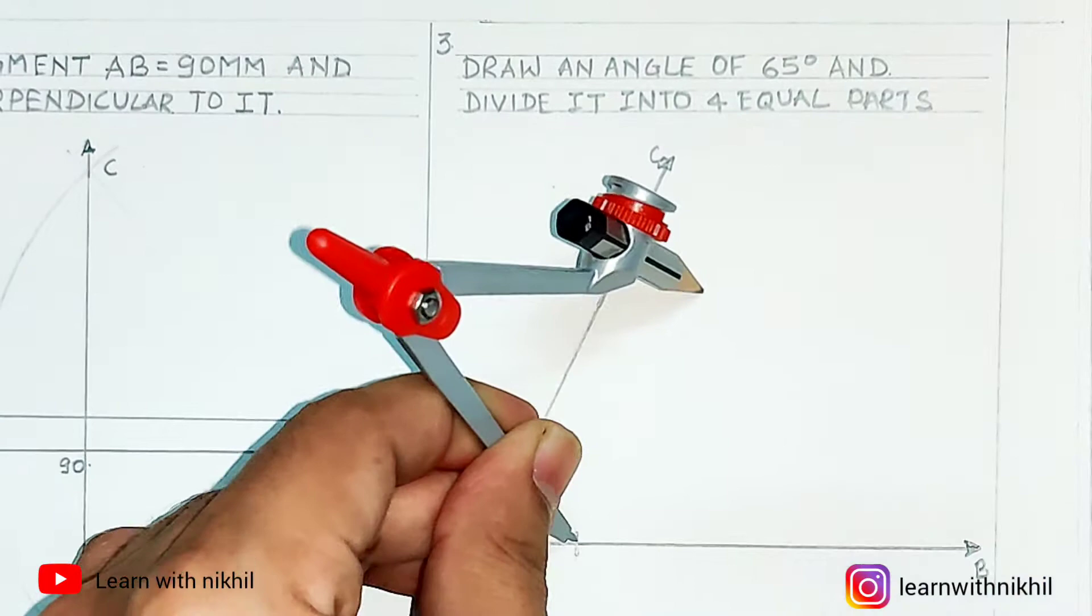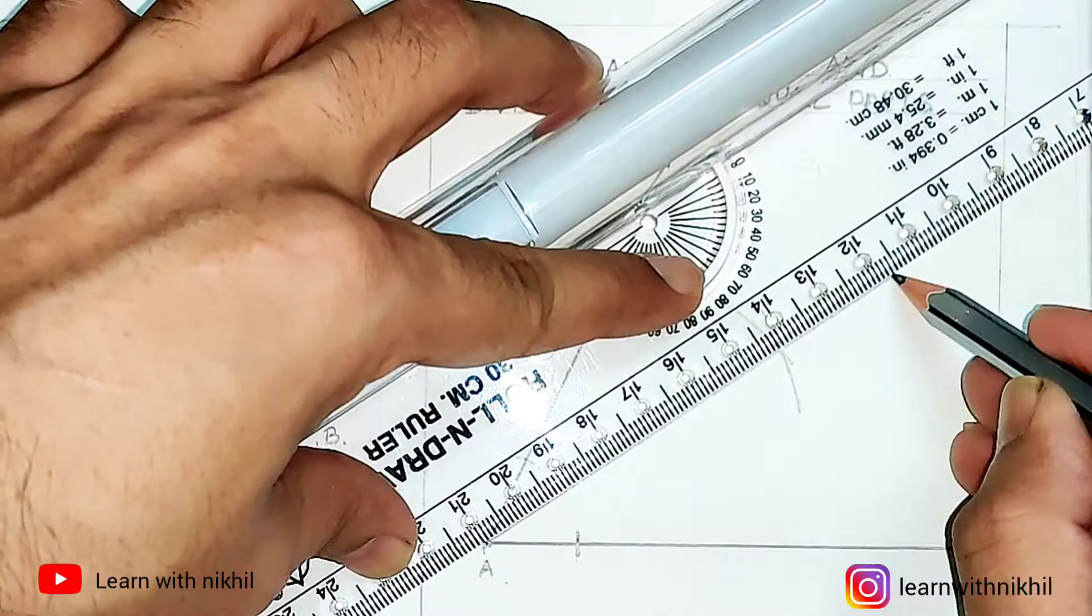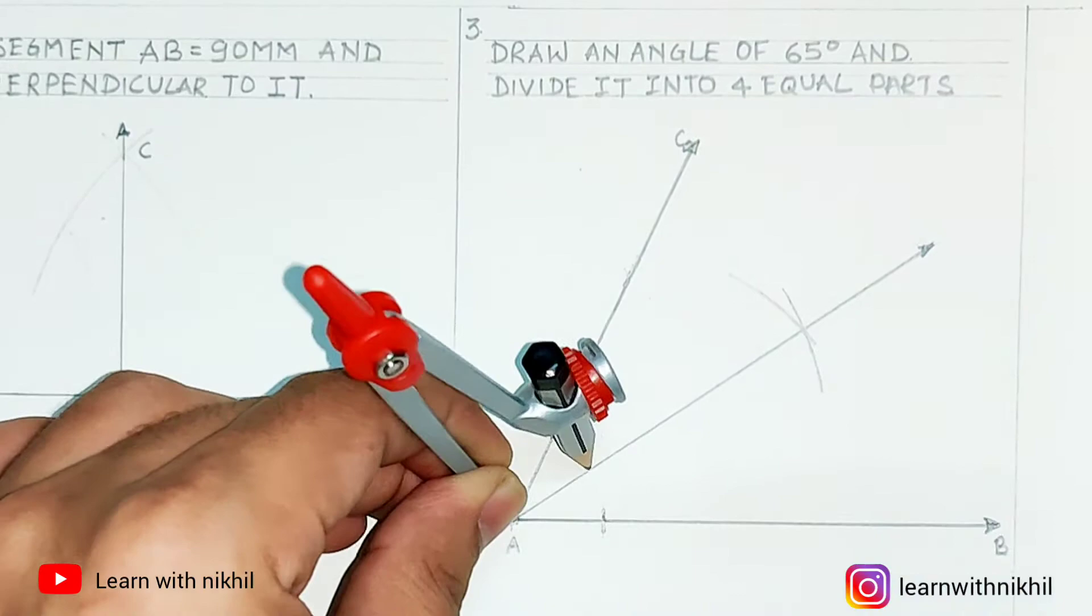Now using the angle bisector method, we will first divide the angle into two equal parts. Through the angle bisector method, I have divided the angle into two equal parts.